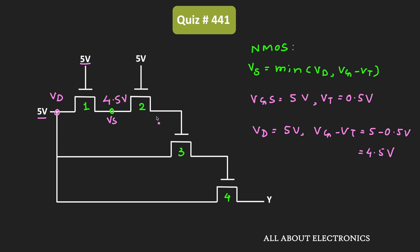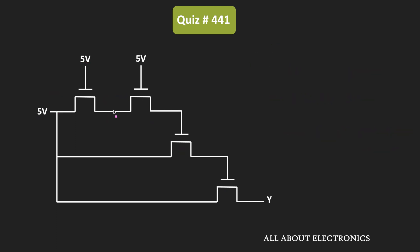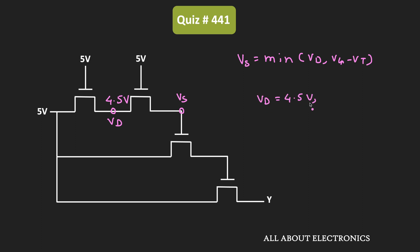That 4.5V will be the input for the second pass transistor. For the second pass transistor, this node acts as a drain terminal with input 4.5V, and the output node acts as the source terminal. Once again, Vs will be the minimum of Vd and (Vg − Vt). Here Vd = 4.5V, while Vg − Vt = 5 − 0.5 = 4.5V. Since both voltages are equal, the output at this node will be equal to 4.5V. So the output of the second pass transistor is 4.5V.